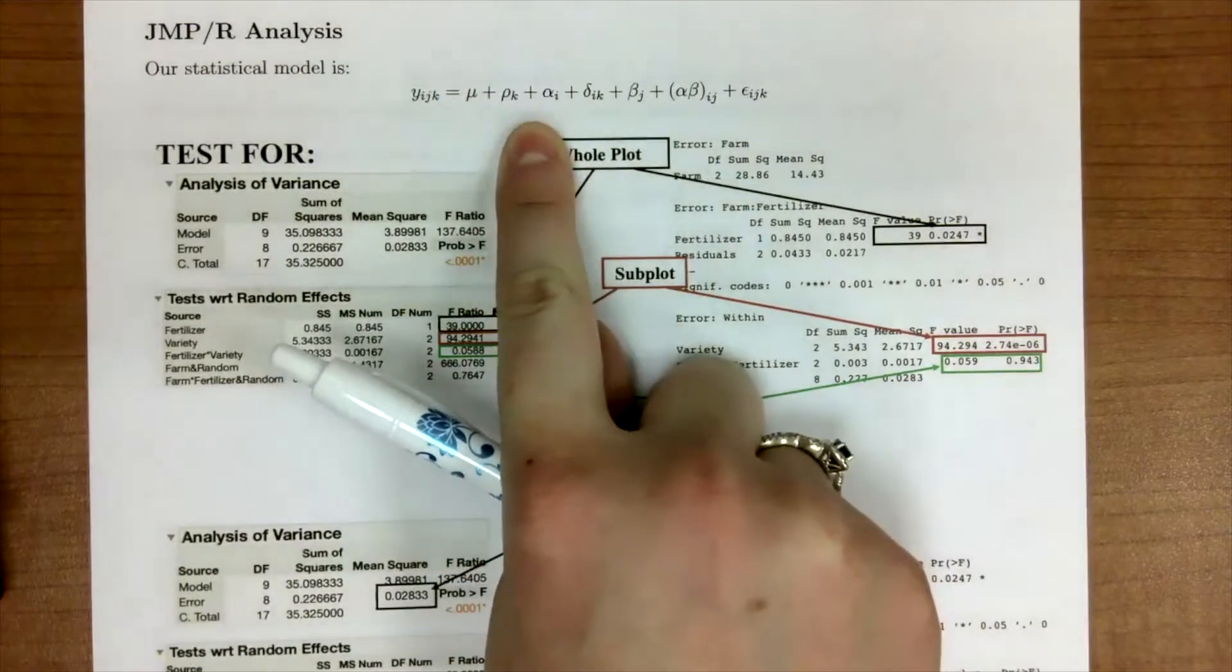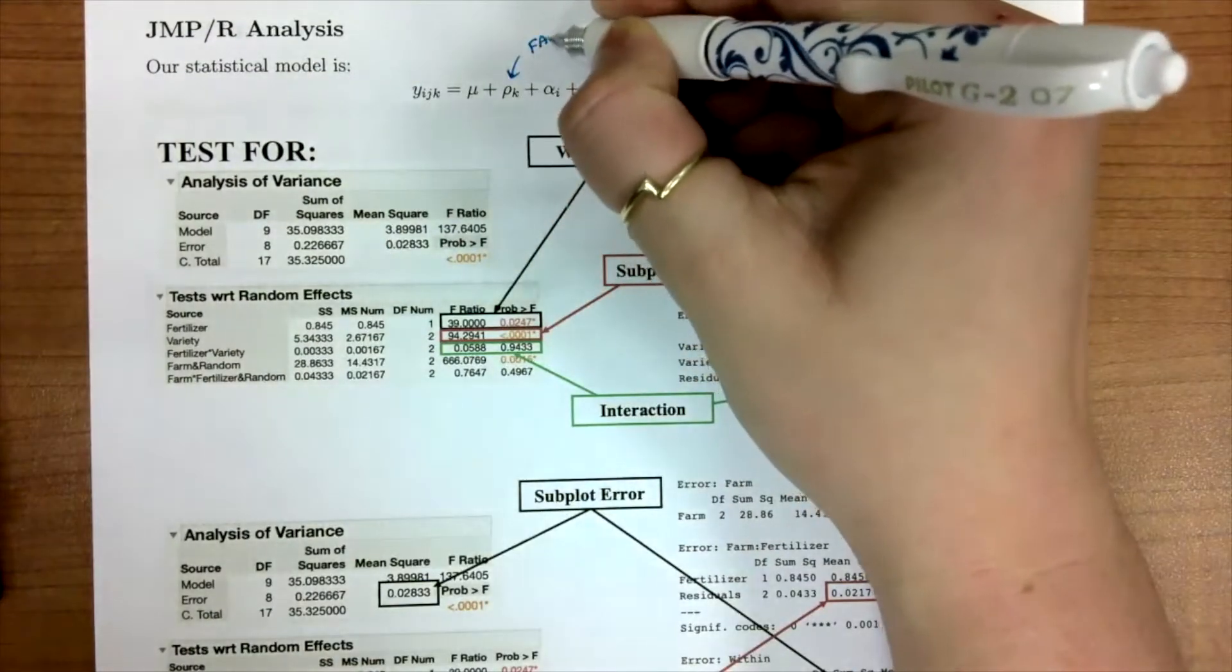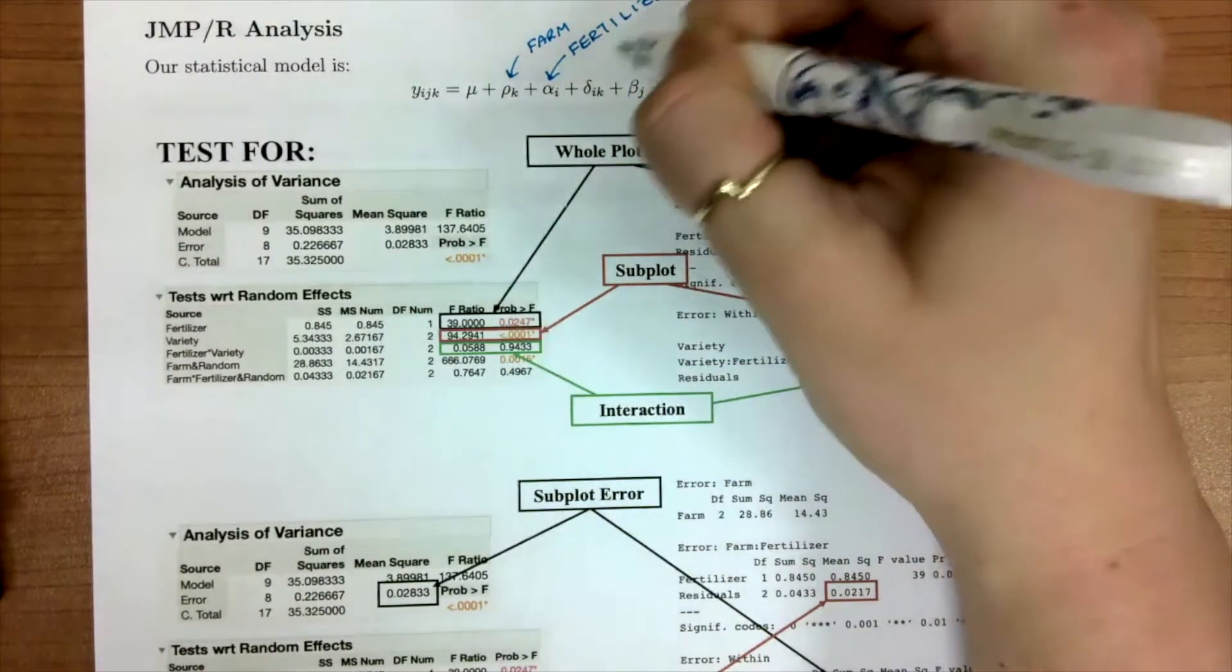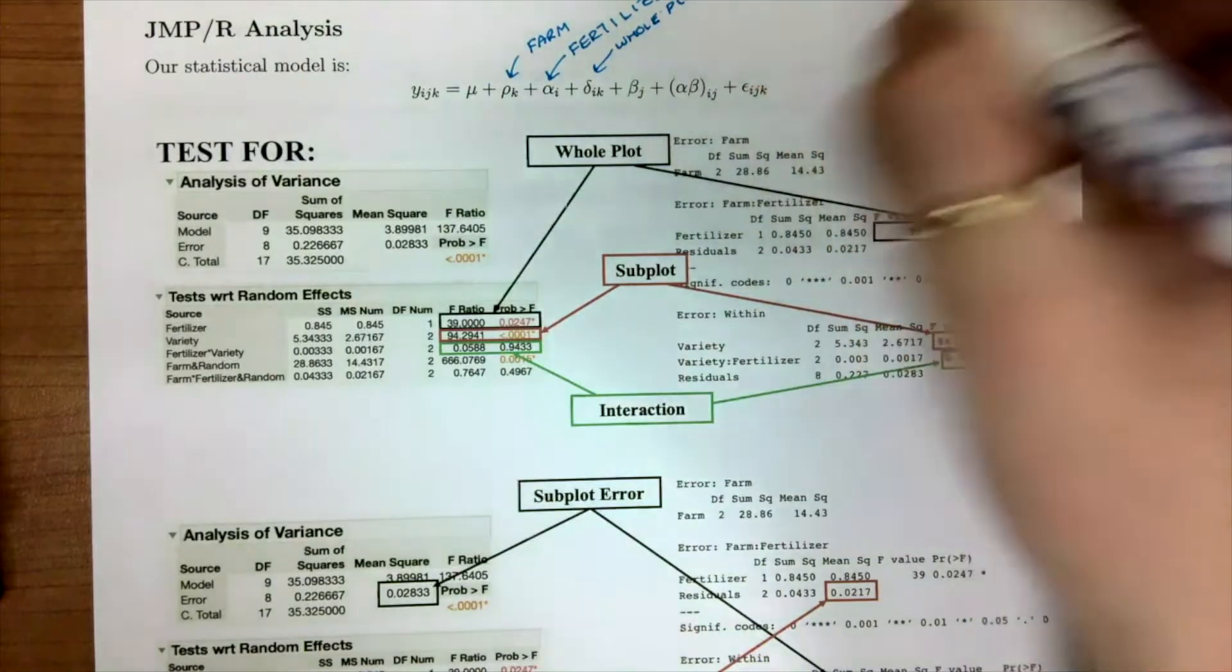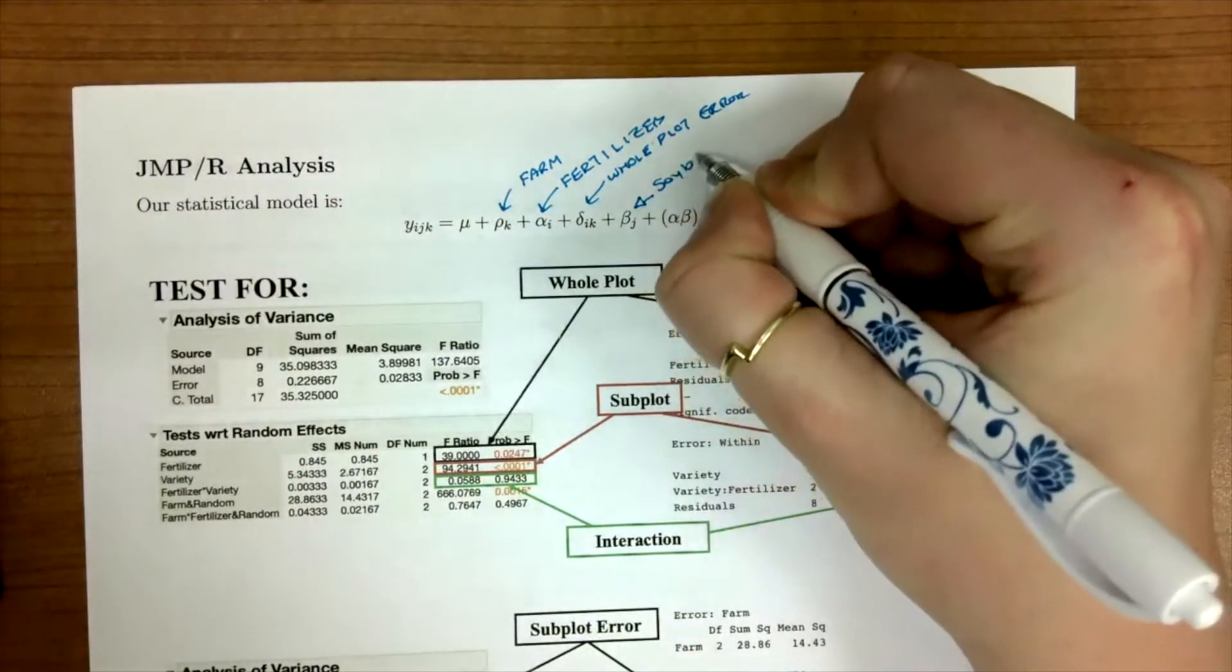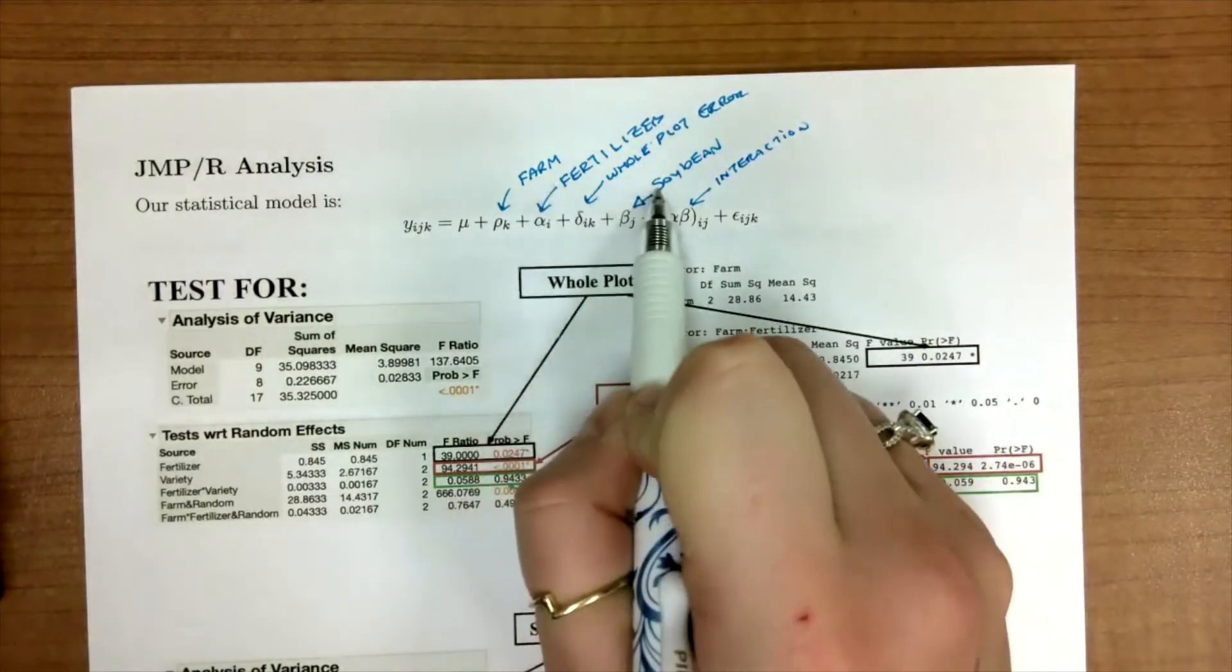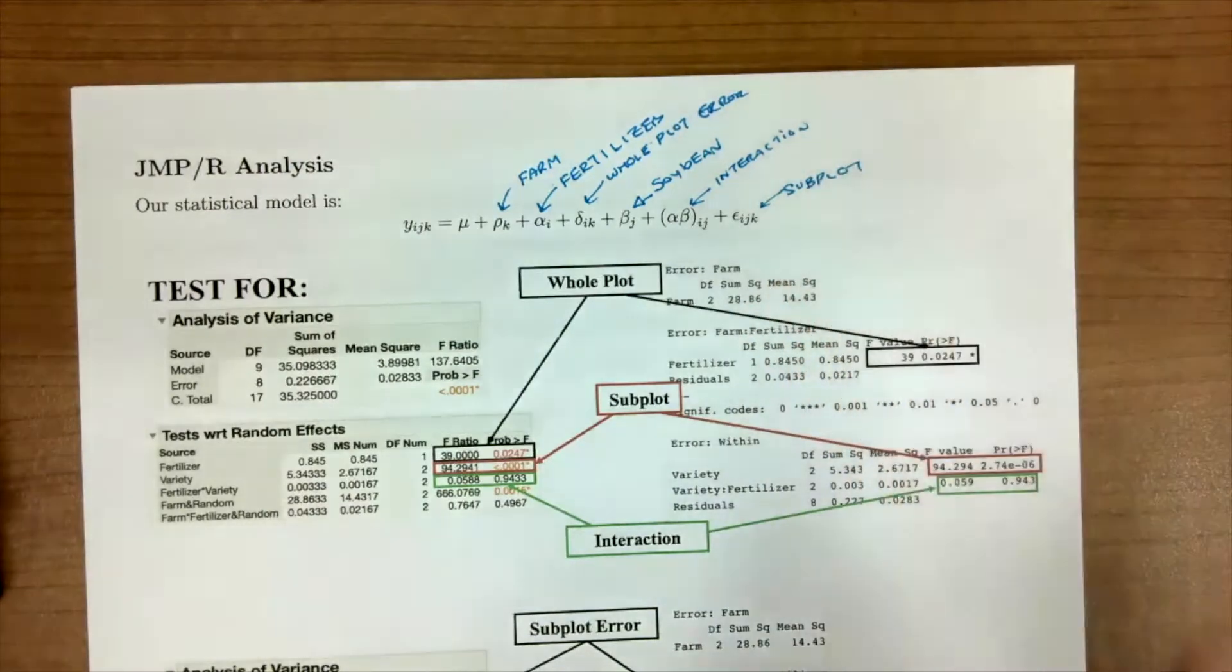Let's recall that our statistical model looks like this where rho is our farms, alpha is going to represent our fertilizer, delta is our whole plot error, beta is going to represent our soybean variety, alpha beta is the interaction between fertilizer and soybean, and then we have our error term at the subplot level.